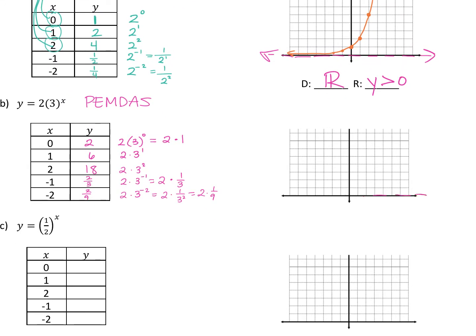Our asymptote is here — always the x-axis. We have: zero, two; one, six; two, eighteen goes way off the graph so I'm not even going to plot that one. Negative one, two thirds would be about here; negative two, two ninths would be about there. Then we draw our curve. Questions on that?